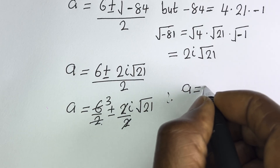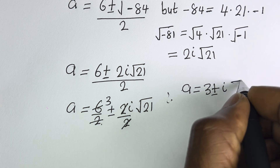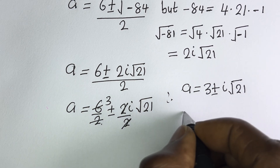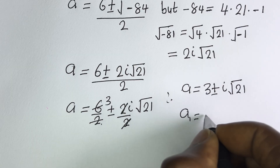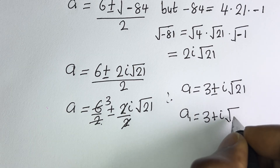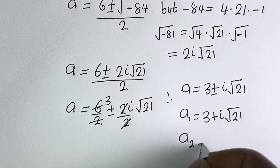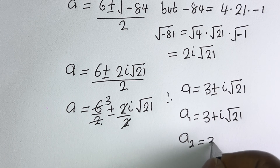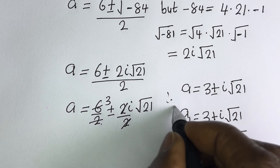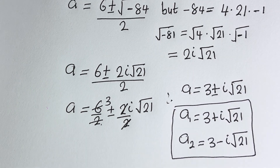Therefore, A equals 3 plus or minus i square root of 21. So A₁ equals 3 plus i square root of 21, and A₂ equals 3 minus i square root of 21. These are the values of A.